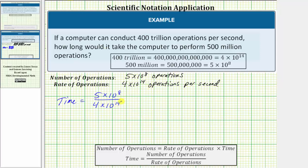The units will simplify to seconds. So this quotient is equal to 5 divided by 4 times 10 to the 8th divided by 10 to the 14th. 5 divided by 4 is equal to 1.25. So we have 1.25 times 10 to the 8th divided by 10 to the 14th, which equals 10 raised to the power of 8 minus 14, which is negative 6.